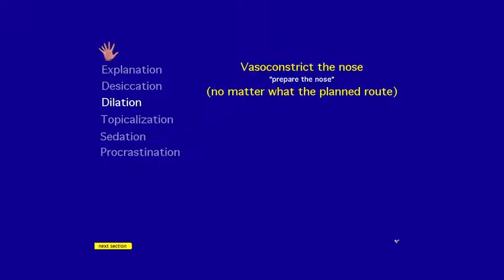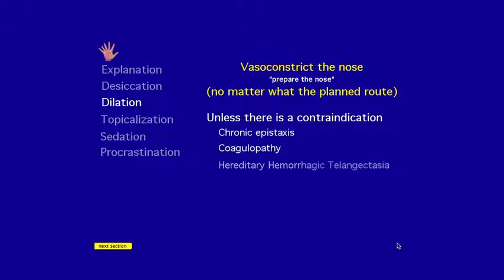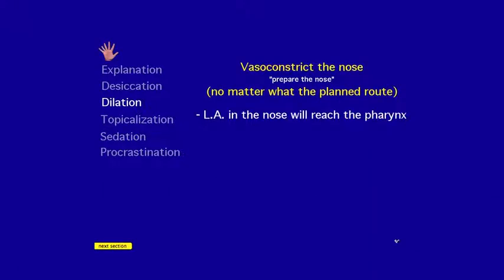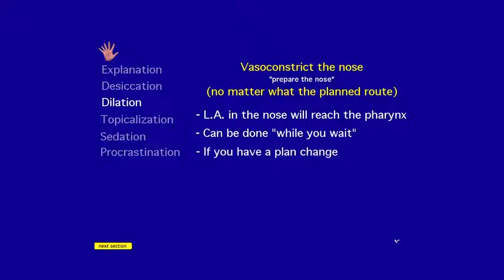Dilatation is a reminder to always prepare the nose, no matter how you're planning to intubate. I always prepare the nose unless there are contraindications such as epistaxis, coagulopathy, HHT, pregnancy, or anatomic obstruction. I give a vasoconstrictor in the nose. Local anesthetic in the nose will eventually reach the pharynx and help with the pharyngeal block, and it can be done while waiting for the glycopyrrolate to work since there's no saliva in the nose.